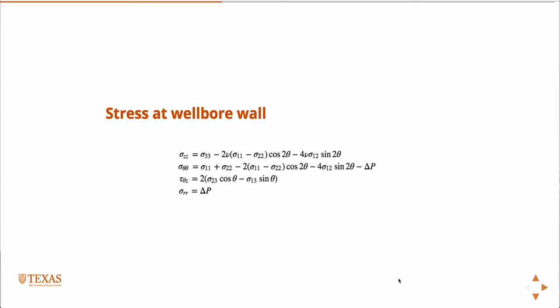Effective stress is S minus the pore-pressure times the identity measures. So these are the Cartesian components of the stress that are plugging into these equations, and you get the stress in the wellbore, where theta is an angle around the wellbore.